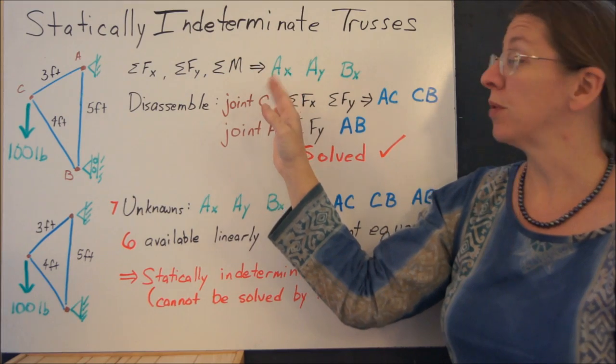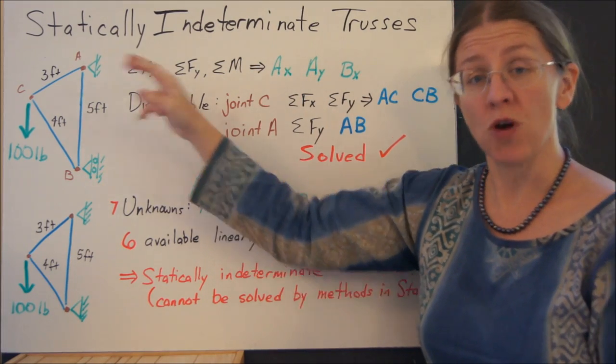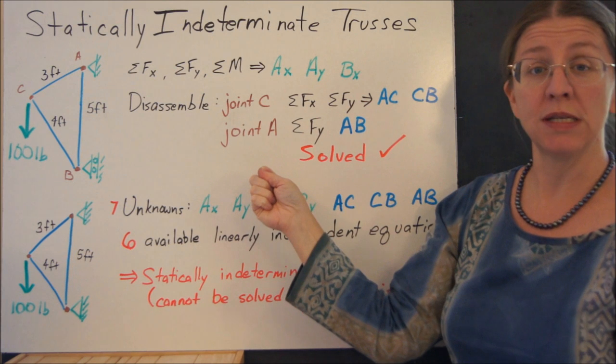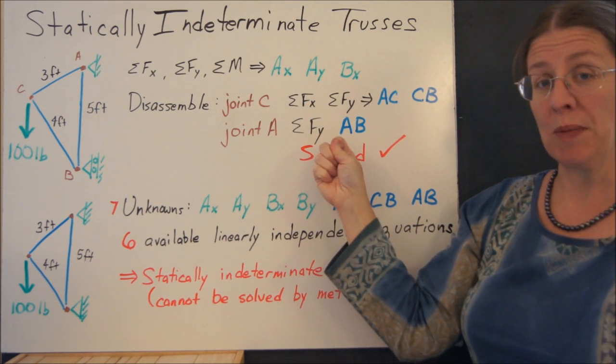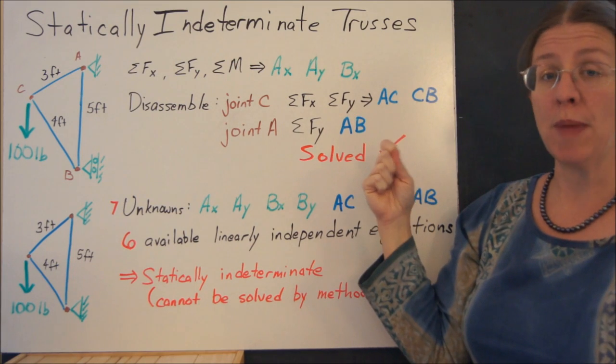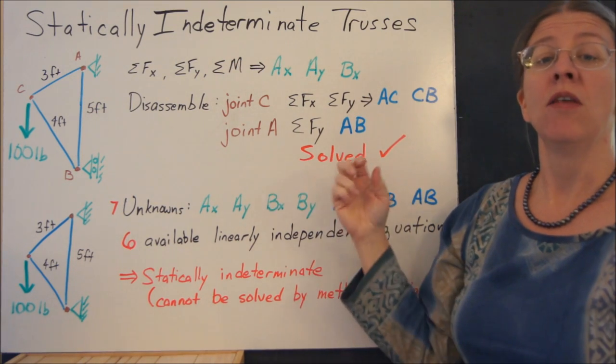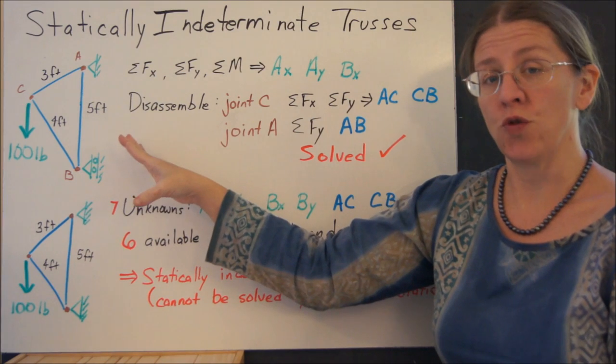Once I have those three, I can disassemble my truss and look at, for example, the joints at C and A, and solve those joint equilibrium equations to find the three members. I know I can do that. I've done it before. This will allow me to solve that truss.